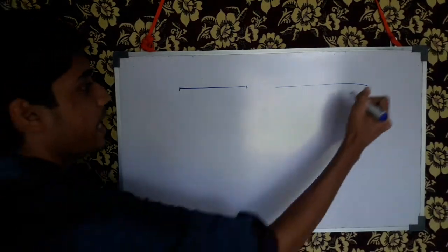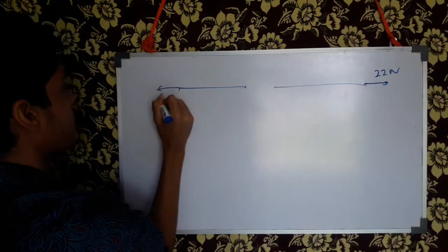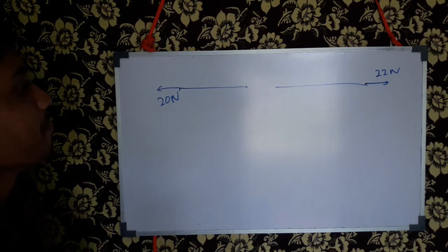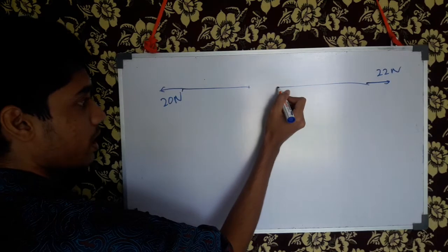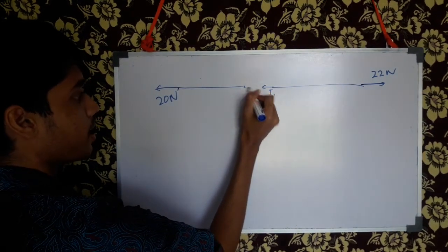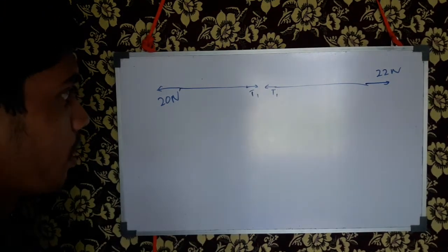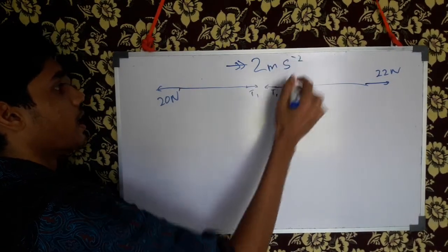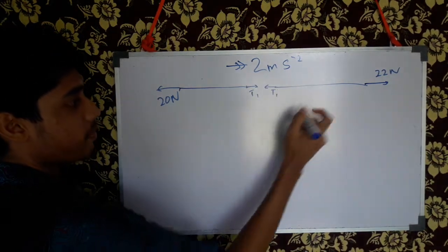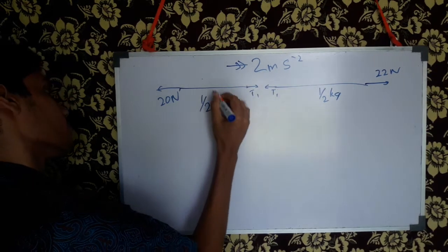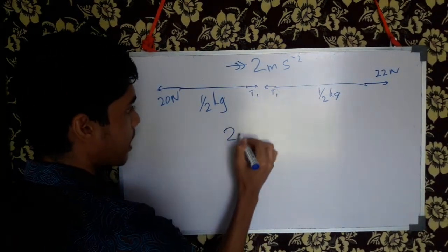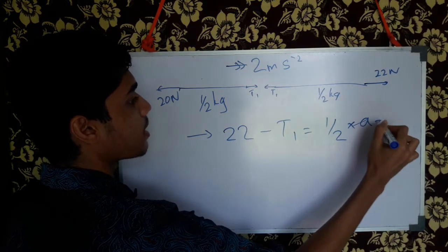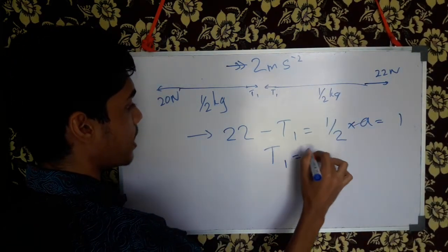Now let's see what we have here. This is 22N. This is very good. Let's see what we have here. This is T1. This is 22N. If you want to cut this out, it will be 22N. So let's see what we have here. This is 22N.